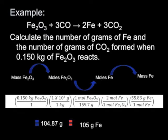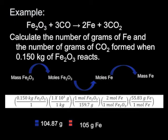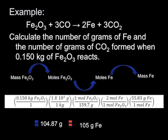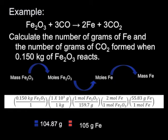So let's look at an example. Let's look at this reaction where we take iron oxide and react it with carbon monoxide to form iron and carbon dioxide. And let's calculate the number of grams of iron and the number of grams of carbon dioxide when 0.150 kilograms of iron oxide reacts. So let's map this out using that process. We have a balanced chemical reaction. Take a second, look at it, confirm that for yourselves.